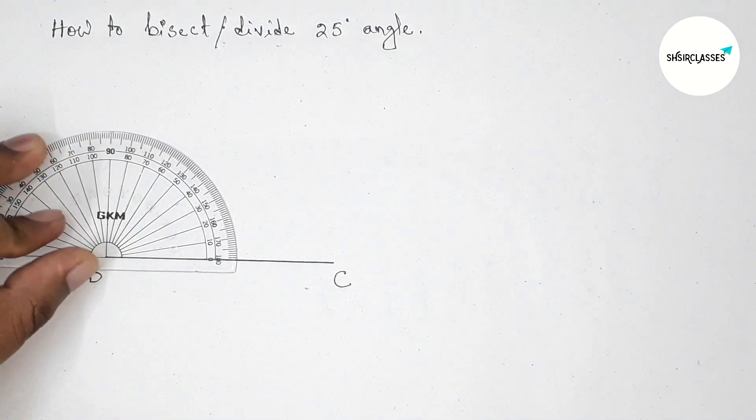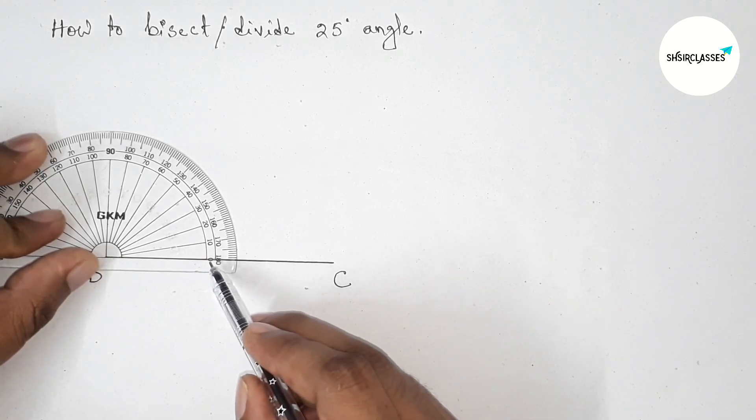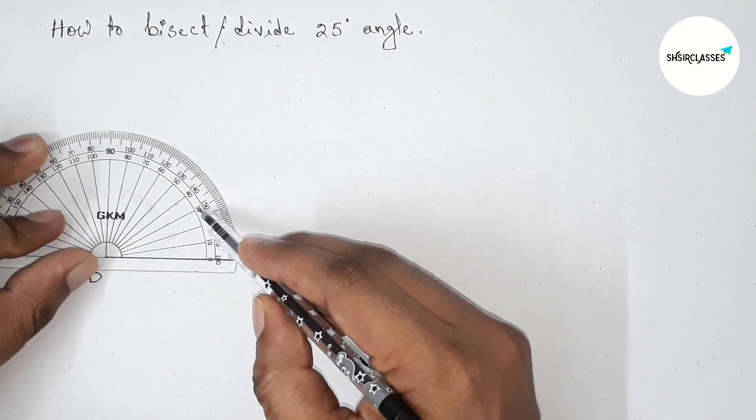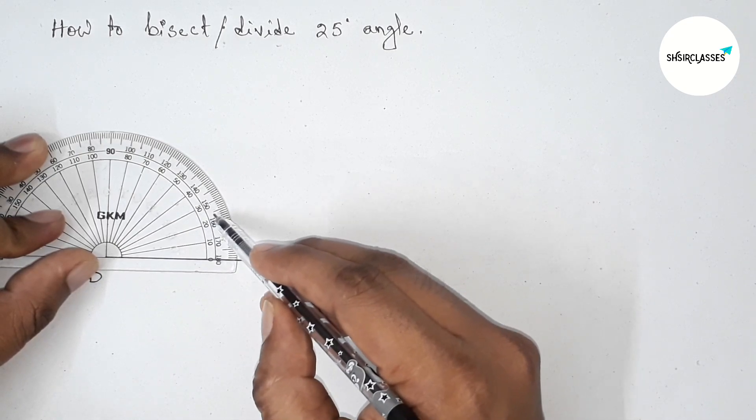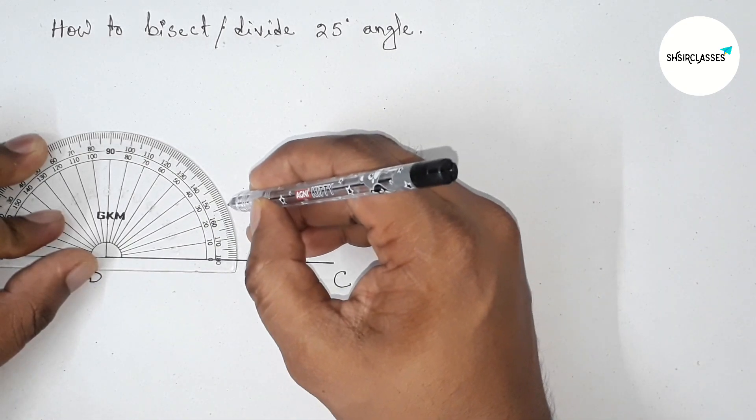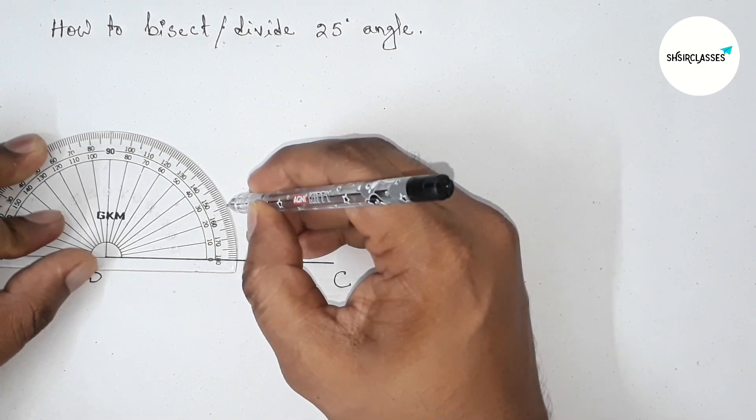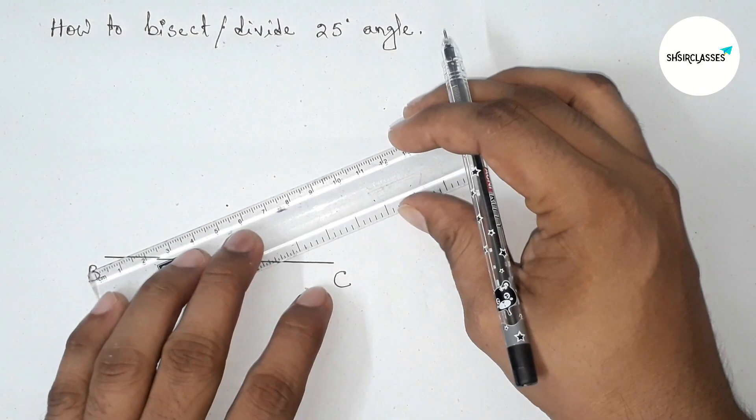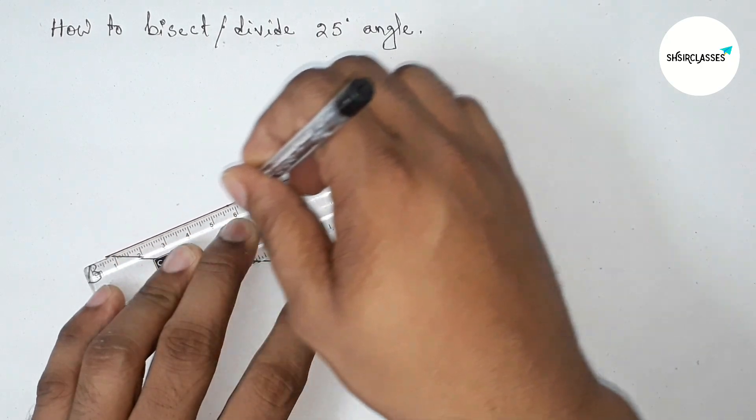Now counting first 25 degrees. So here this is starting 0, then 10, this is 20. Now between 20 to 30 we can find 25. So between 20 to 30, this is 25 degree angle.